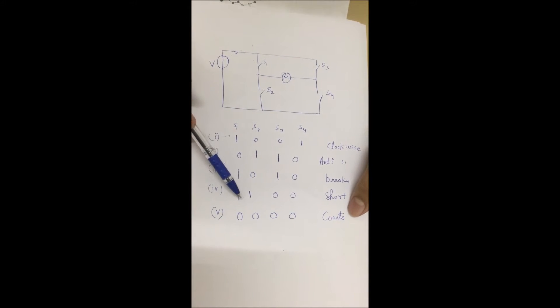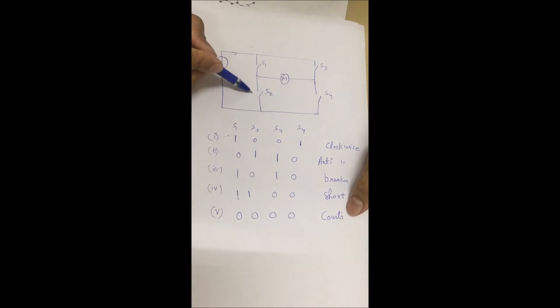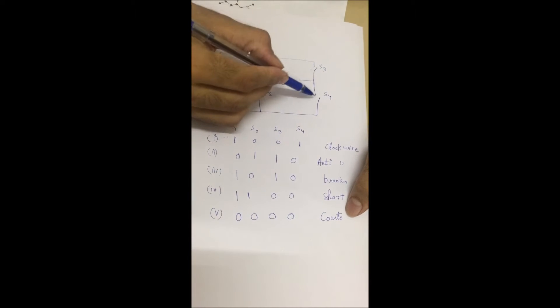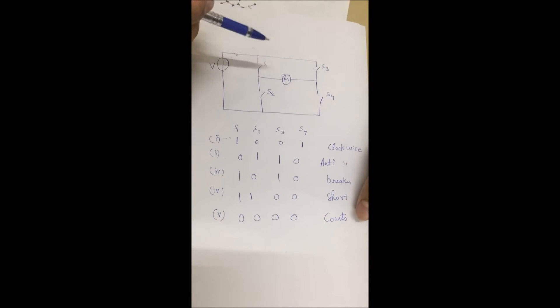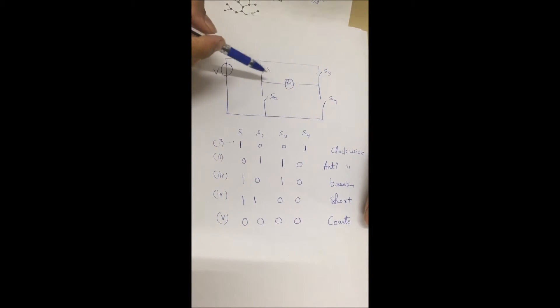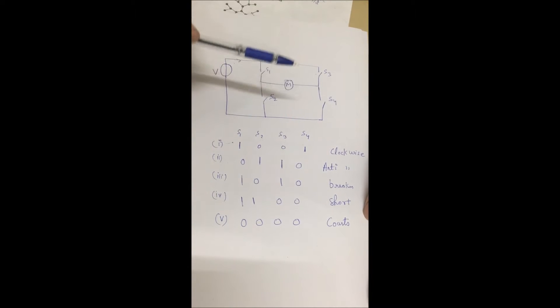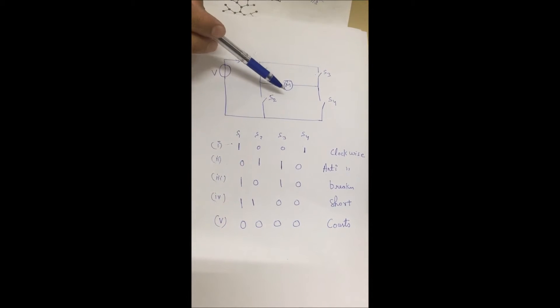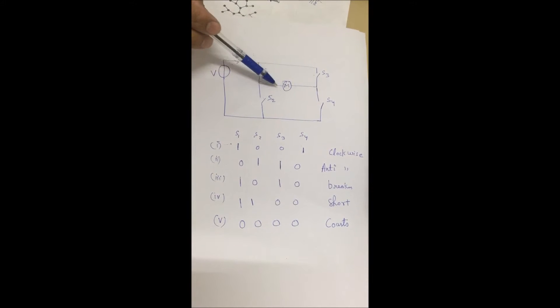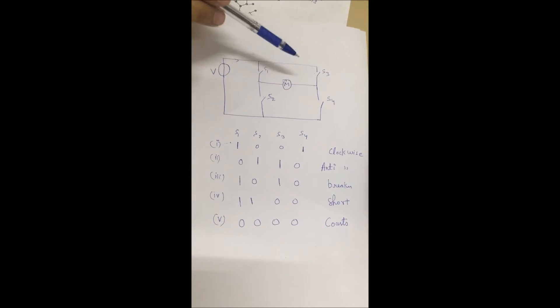The short condition occurs when S1, S2 are closed, or S3, S4 are closed. This is the short condition. And the last one is when all switches are open. So whatever the previous condition of motor, motor moves according to that.